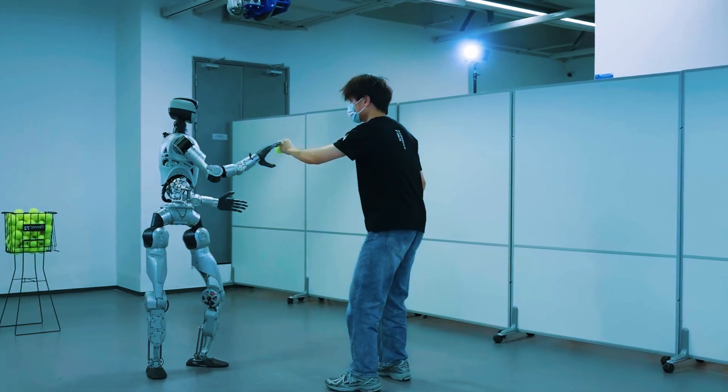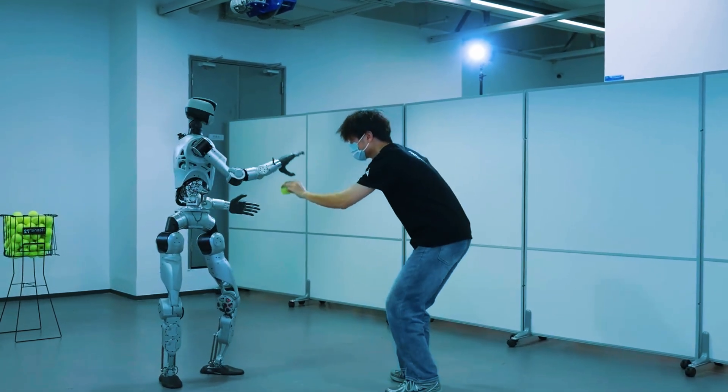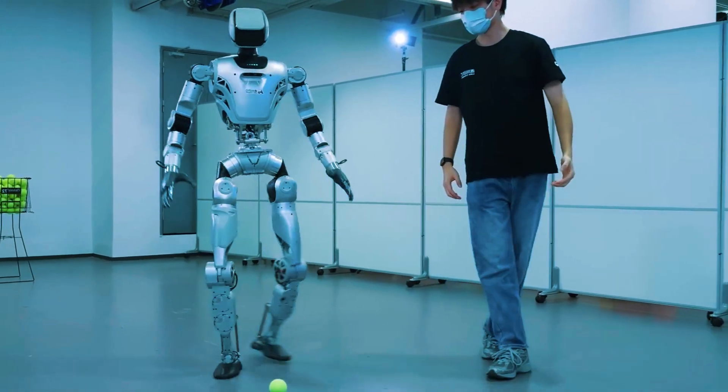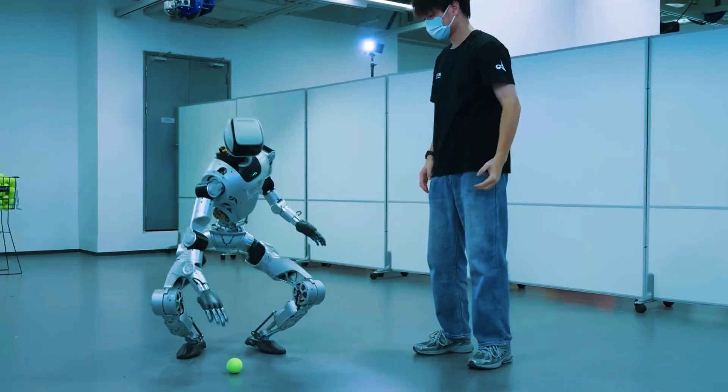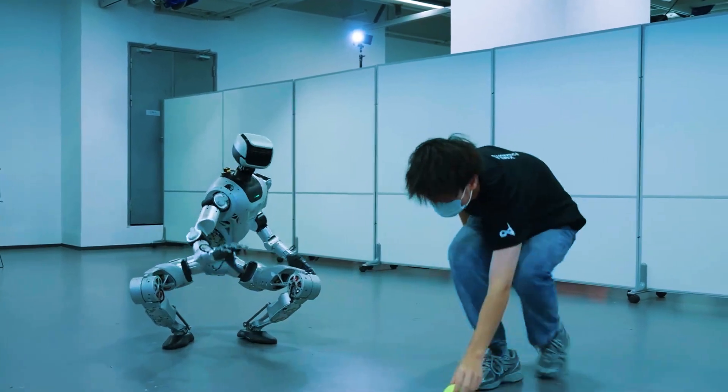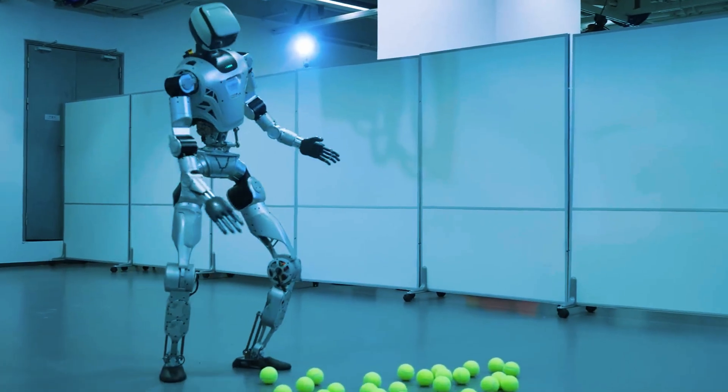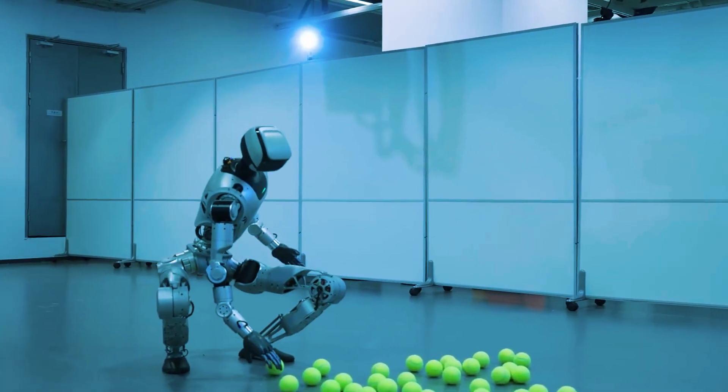You know how most robots either look clumsy or get stuck doing something basic? Well, forget all that. Because today, a full-size humanoid named Ollie just proved it can do something so simple, yet so human, it's blowing people's minds. It picked up and tossed a tennis ball. And trust me, it's way cooler than it sounds.